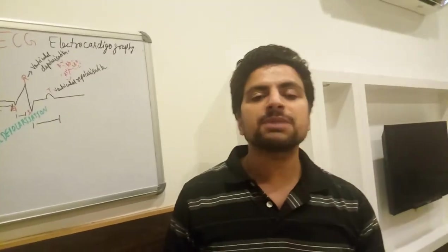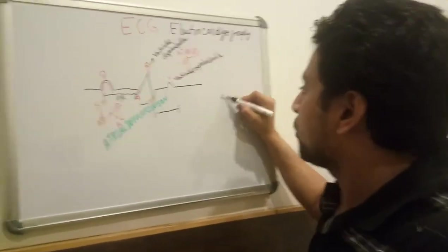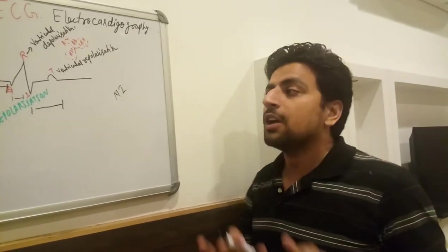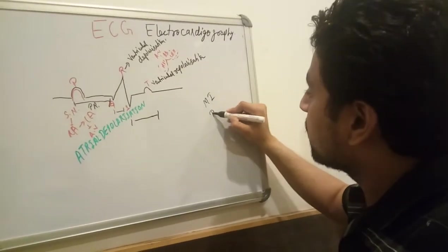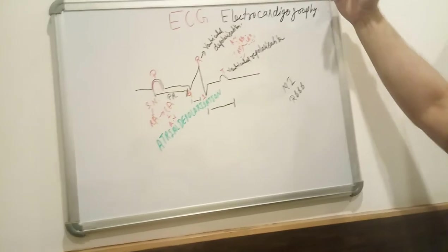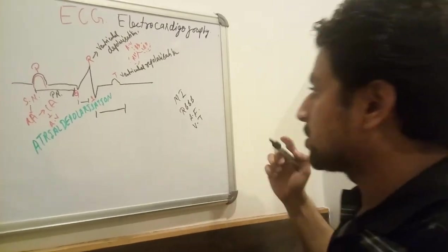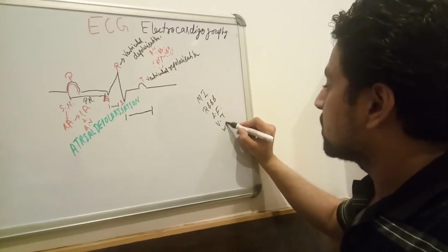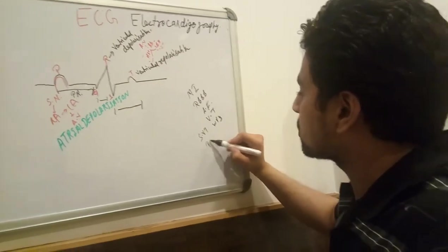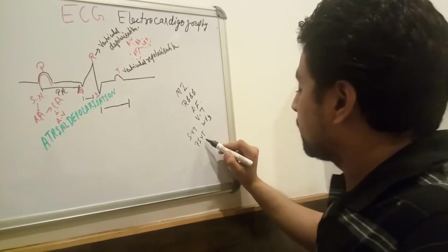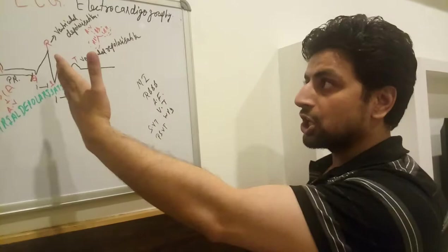The use of ECG is to diagnose various pathologies — this is the primary diagnosis. For example, in MI (myocardial infarction), we can diagnose by ECG and then confirm with markers. Other conditions include right bundle branch block, left bundle branch block, atrial fibrillation, atrial flutter, ventricular tachycardia, ventricular fibrillation, Wolff-Parkinson-White syndrome, and PSVT (paroxysmal supraventricular tachycardia).